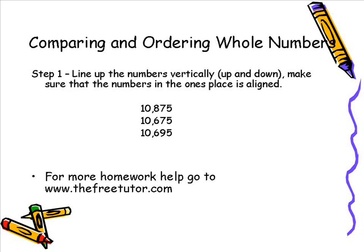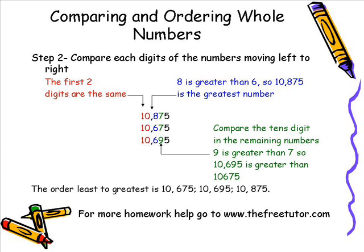Once we have done that then we are ready for step two. Step two says to compare each of the digits of the numbers moving from left to right. Now as you look at these numbers you can see the first two digits moving from left to right are exactly the same. You can see them colored in red. But the third digit in each of the numbers there is a difference. One of the numbers has an 8 and the other two numbers has a 6. We know that 8 is greater than 6 so we can conclude that 10,875 is the greatest number.